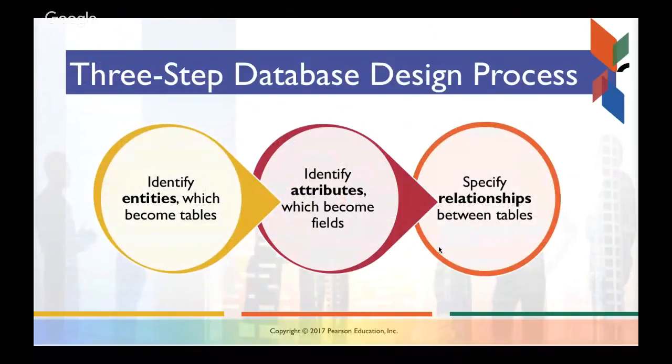So three-step database design process: Entities, Attributes, and Relationships. These are important concepts of Entity Relationship Diagram. An entity is a table, effectively. An attribute is a field in a table. And a relationship is the relationship between tables.